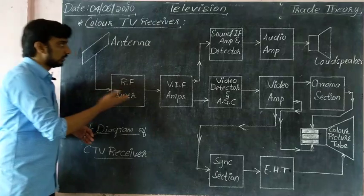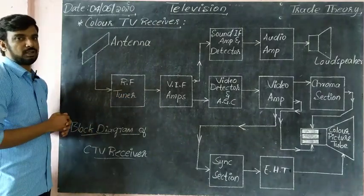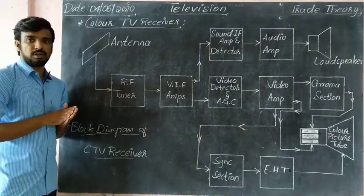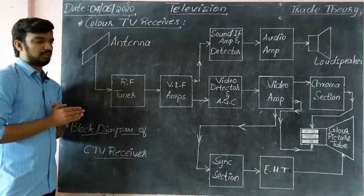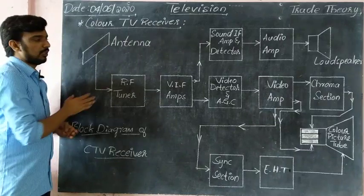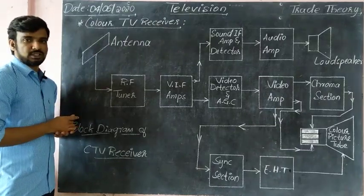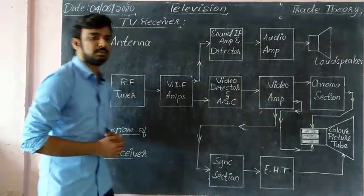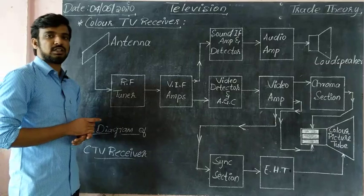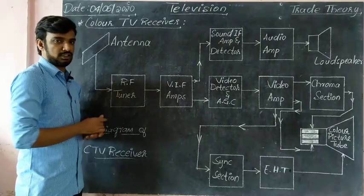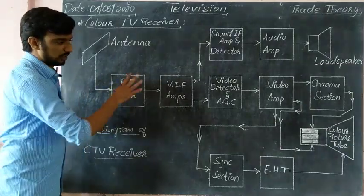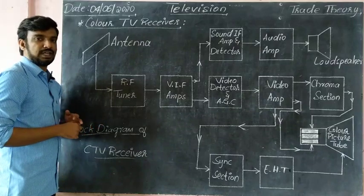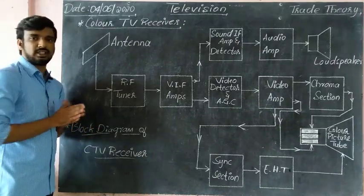This is the color TV receiver block diagram. The black and white TV receiver is the same. We will check the extra sections. We will check the chroma section, which is the color processing section. The 5th stage is the black and white TV receiver block diagram.